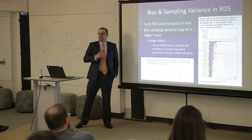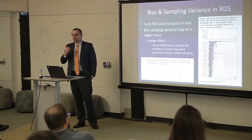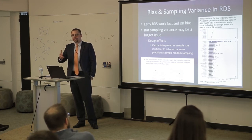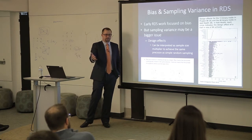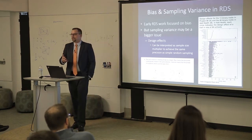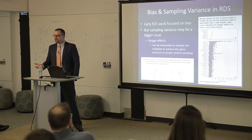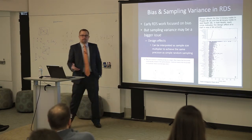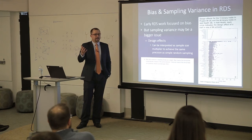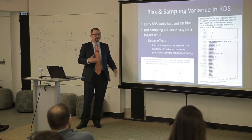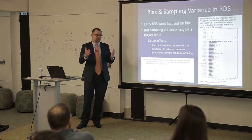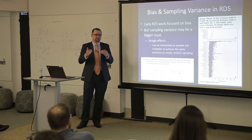We care about this because if you're a funder and you see two cities with HIV prevalence of 40% versus 60% from RDS surveys, and you wanted to dedicate prevention efforts to those cities, you'd want to know whether the one with higher HIV prevalence is actually higher. The design effect or sampling variance suggests that perhaps those are actually non-distinguishable differences.